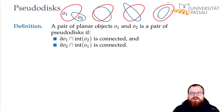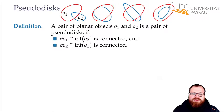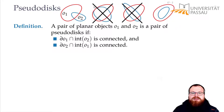In the fourth example, the blue boundary lies completely inside the interior of the red, and the red boundary does not lie at all in the interior of the blue. So this is also a pair of pseudodisks. To summarize: the first and fourth examples are valid pairs of pseudodisks; the second and third are not.